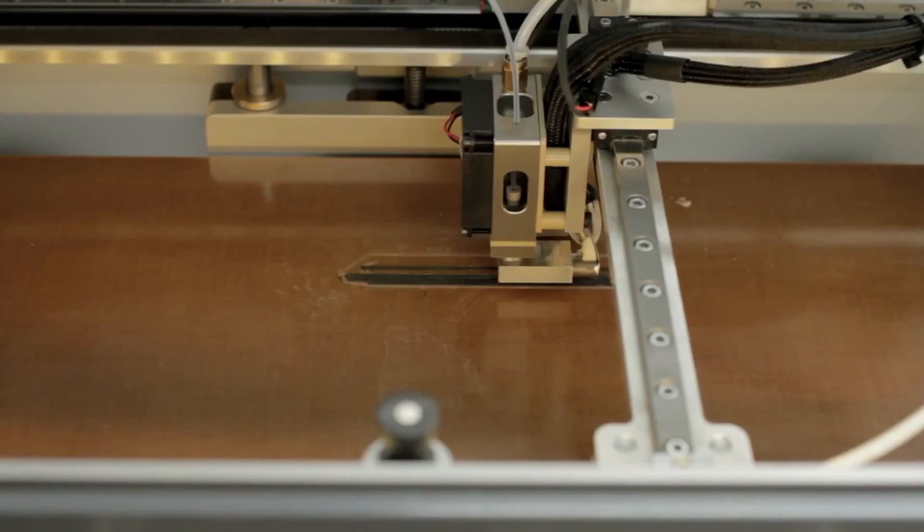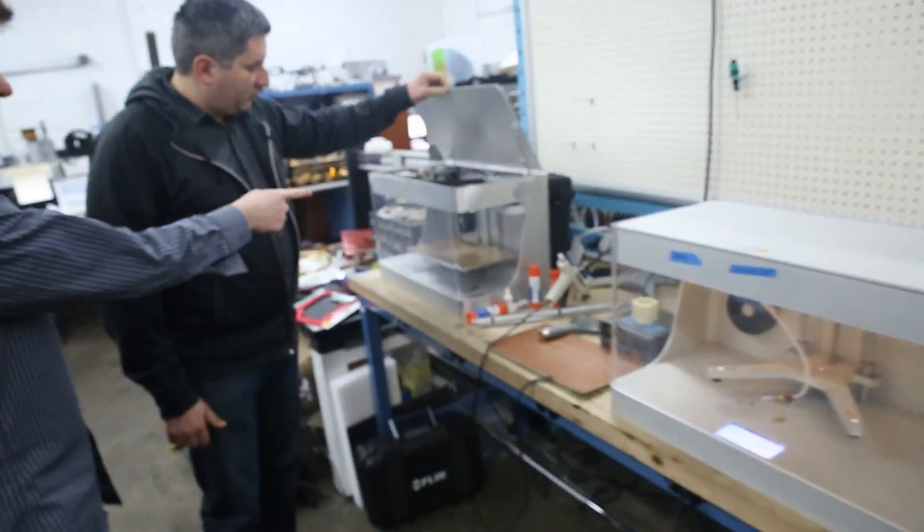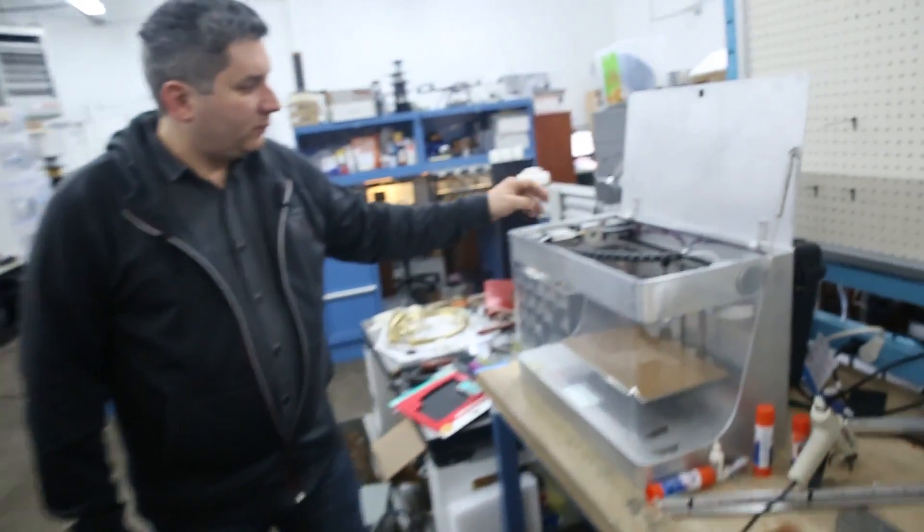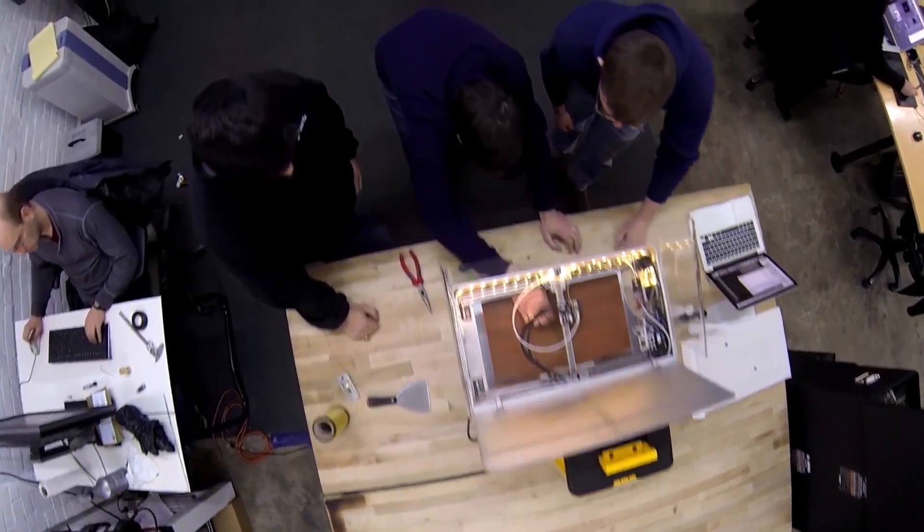These were the two beta printers. This was actually John Herstek's first beta. This is one of the first betas of five. This is where we ran the prototype production line. So the first units came out here. Most of the manufacturing was done here.